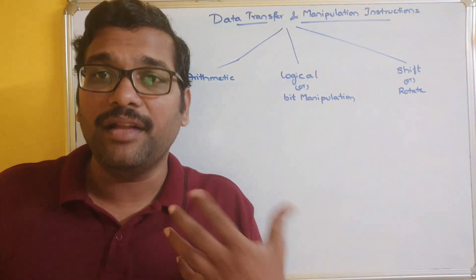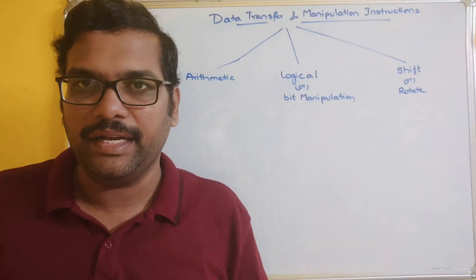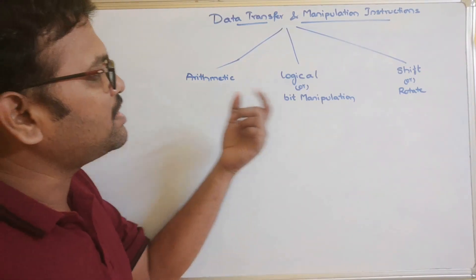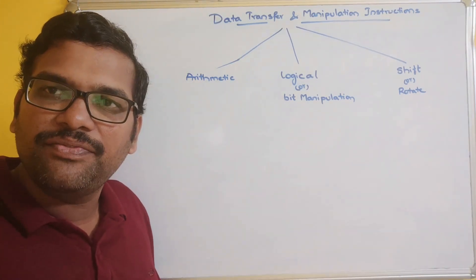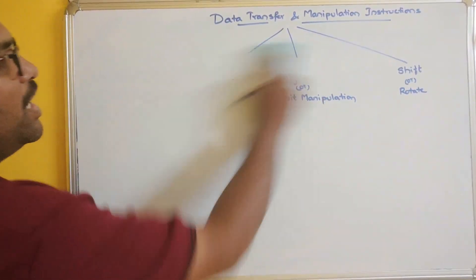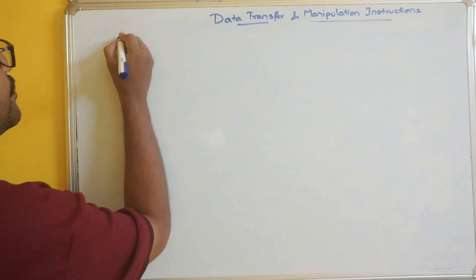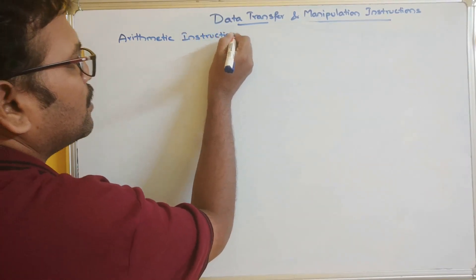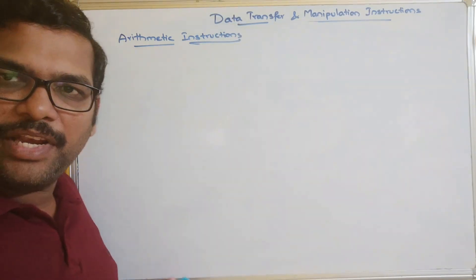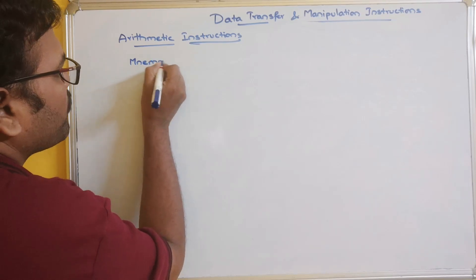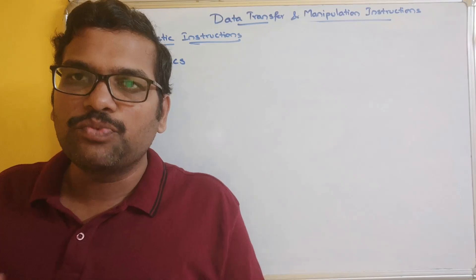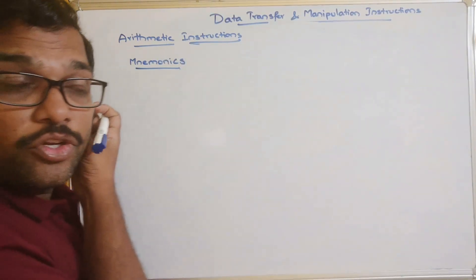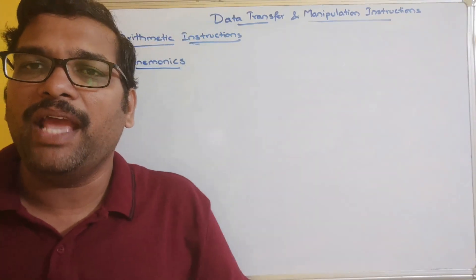These instructions define what operations are done in order to change or compute the data. We'll see one by one what are the different instructions of arithmetic category, logical category, and shift or rotate category. So let us start with arithmetic instructions. The mnemonics are words which represent the operation, and they are mainly used in assembly language, which is a low level language.